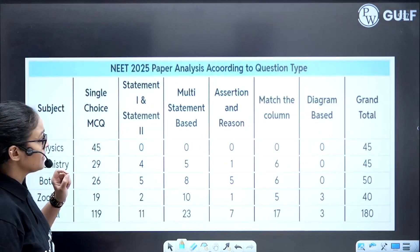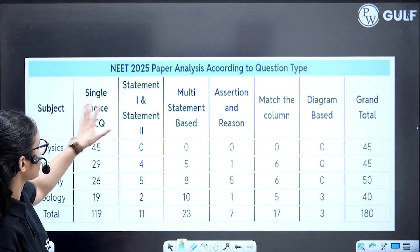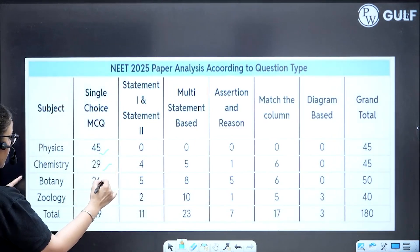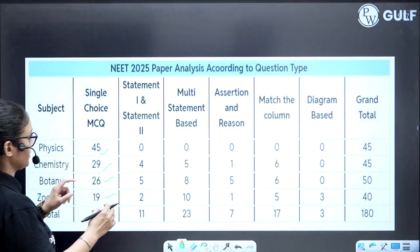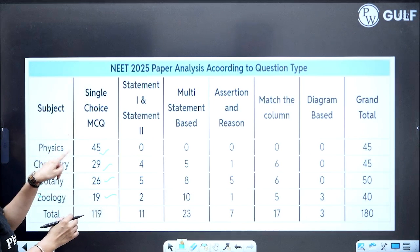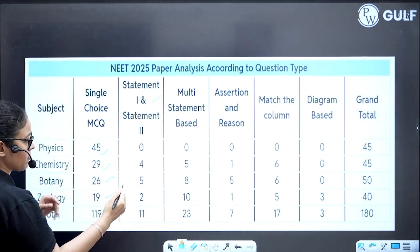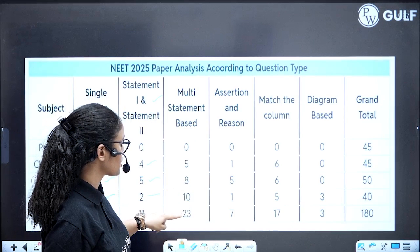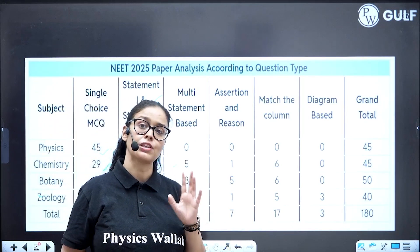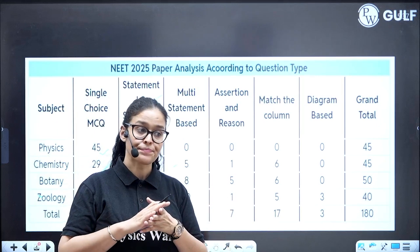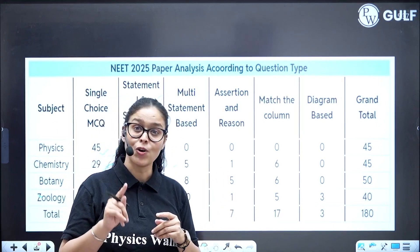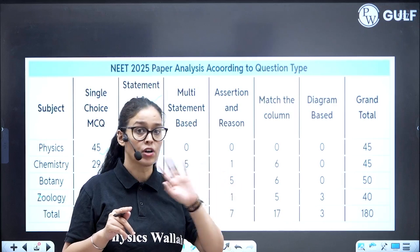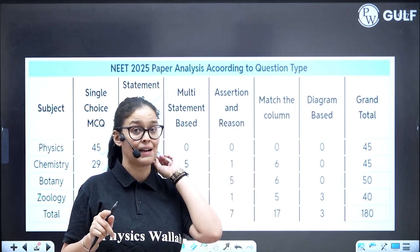The 2025 paper analysis according to question type: single choice MCQ - Physics 45, 29, 26, 19 out of 45 questions. Single choice questions MCQ were the number of questions in all subjects. Statement one statement two-based questions: four in chemistry, five in botany, two in zoology, total 11 statement-based questions. Multi-statement-based questions 23. See, this time they changed the pattern and made the papers so lengthy with very good application-based questions. Those kids watching short videos on how to score 700 plus in three days, this is not going to help you.